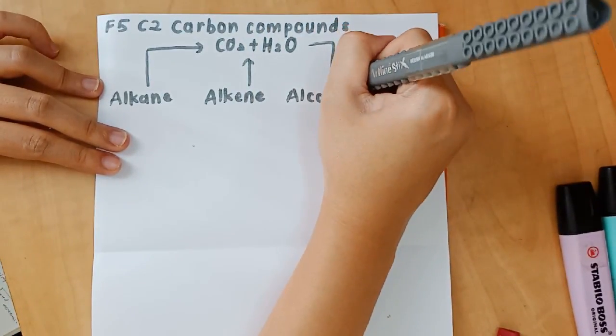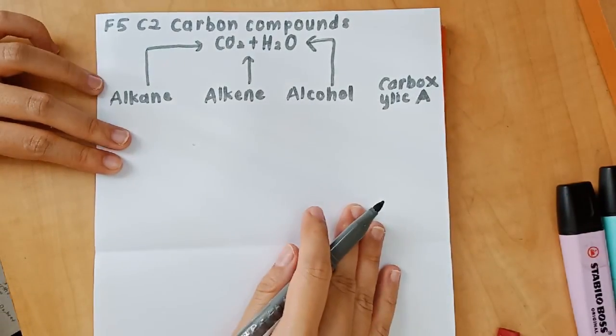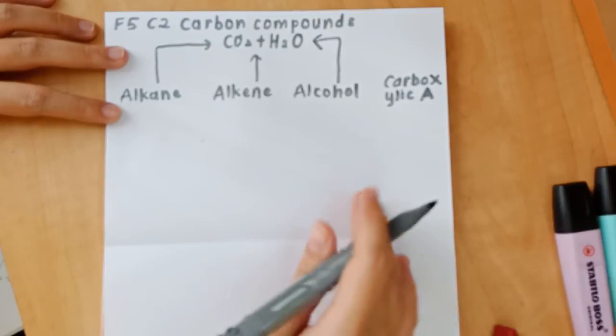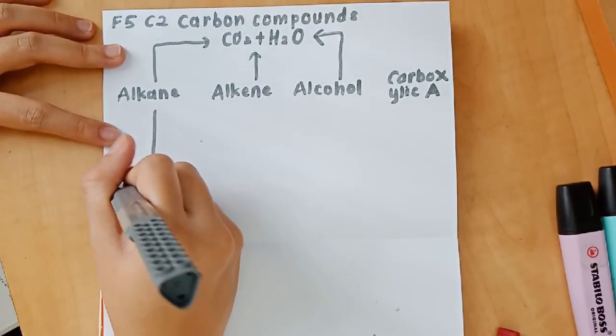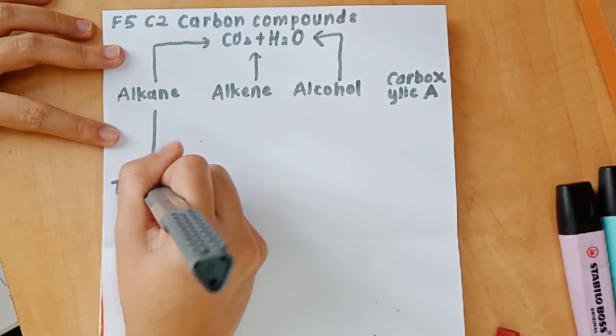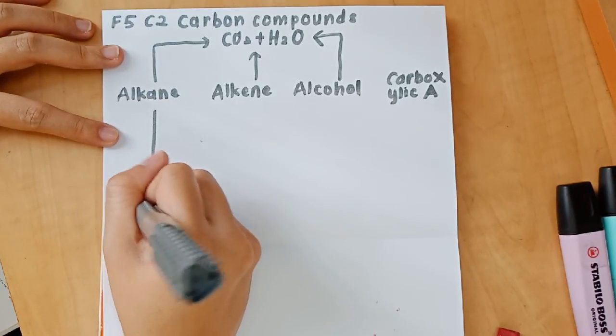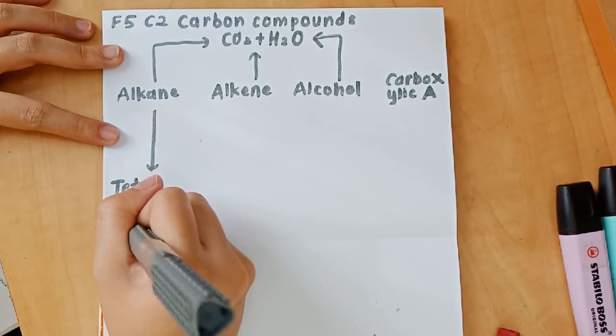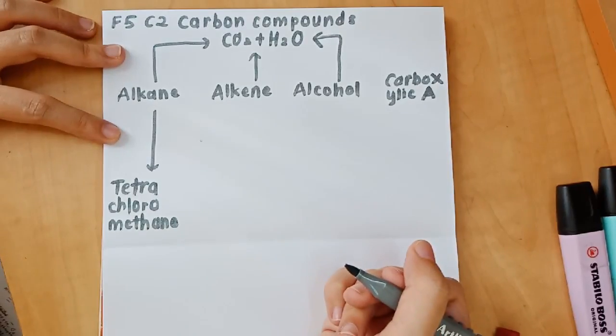So as you can see, I drew arrows from alkane, alkene, alcohol and then ended with CO2 and H2O. Because all of them can undergo combustion in order to produce CO2 and H2O. So I grouped them together by using the same arrows pointing in the same direction.